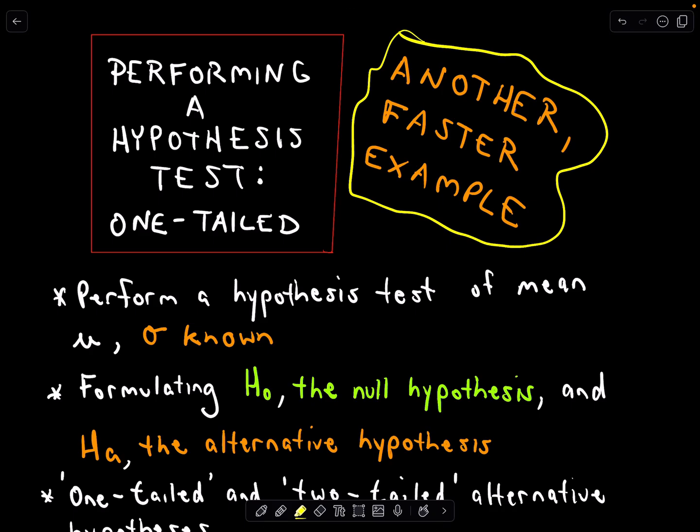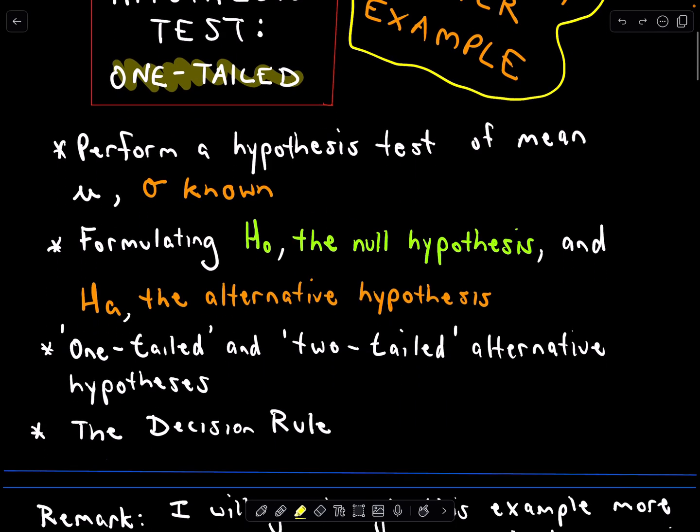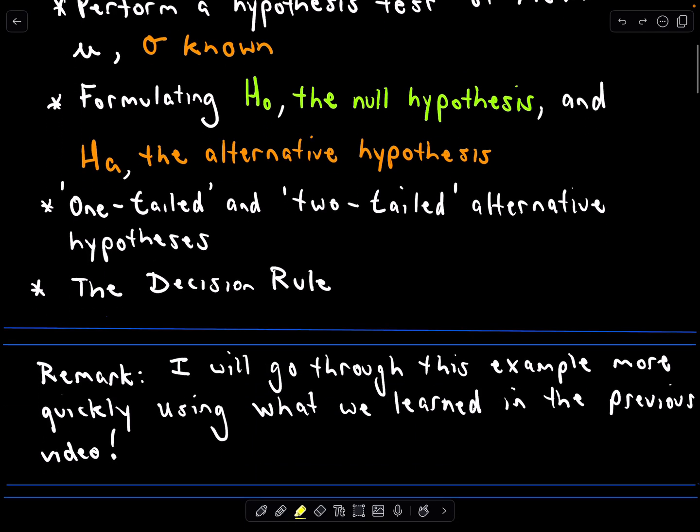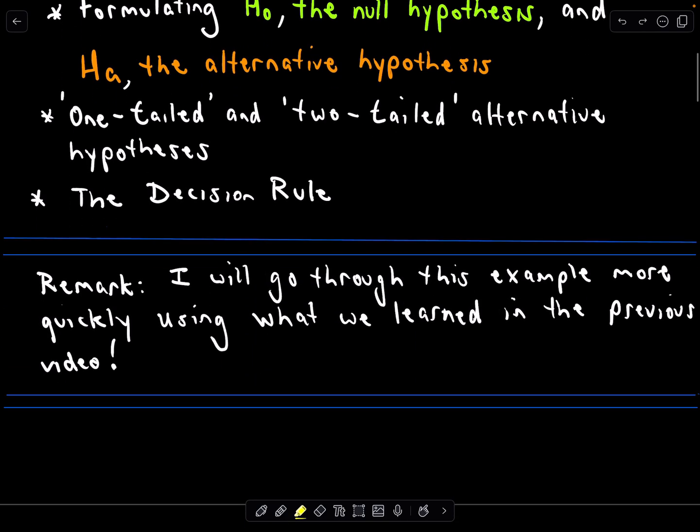In this video, I'm going to perform another one-tailed hypothesis test. I'm going to go through this example a little bit faster. So if you haven't seen the long example where I go through everything in detail, definitely look at that one first. This one is just going to be an extension of that, and it's going to show you that if you have all the information, there's really not too much to do.